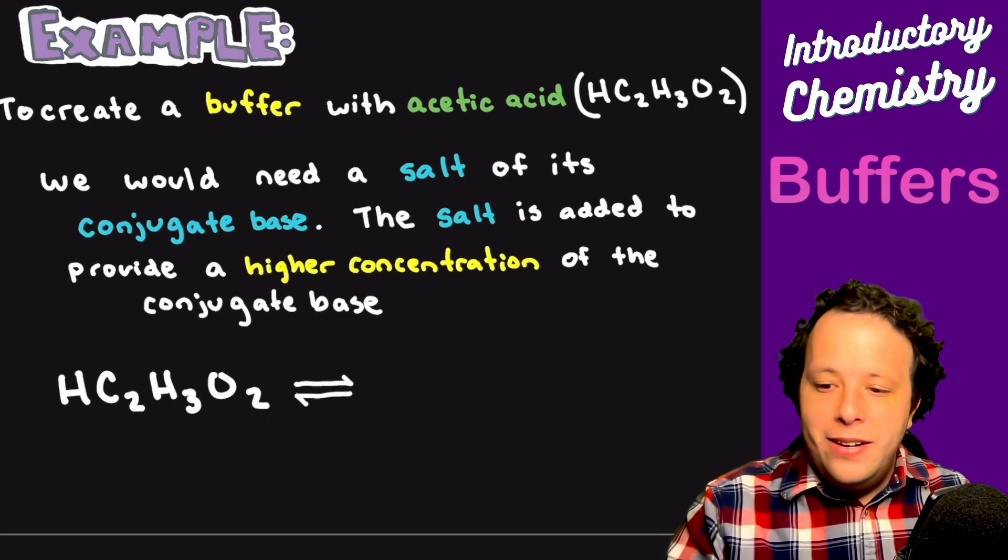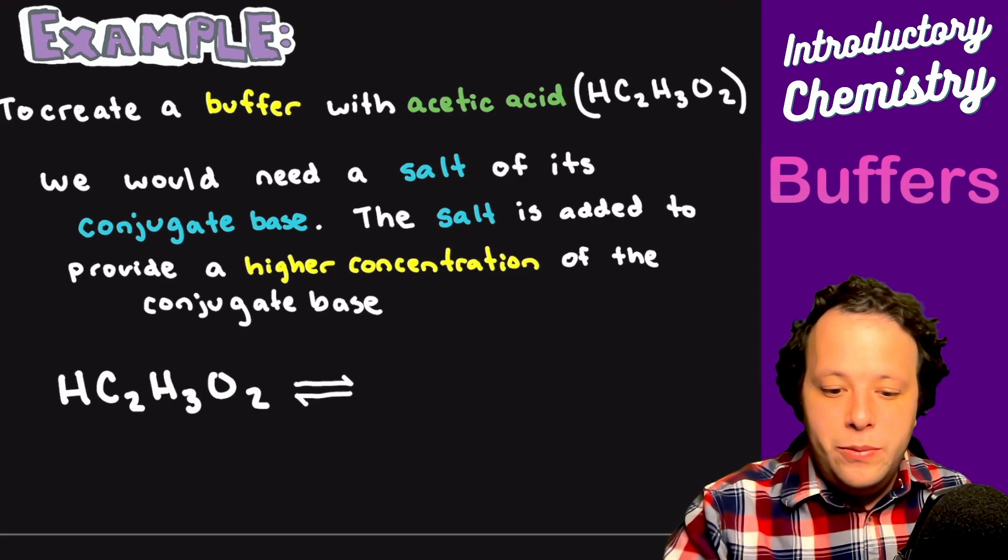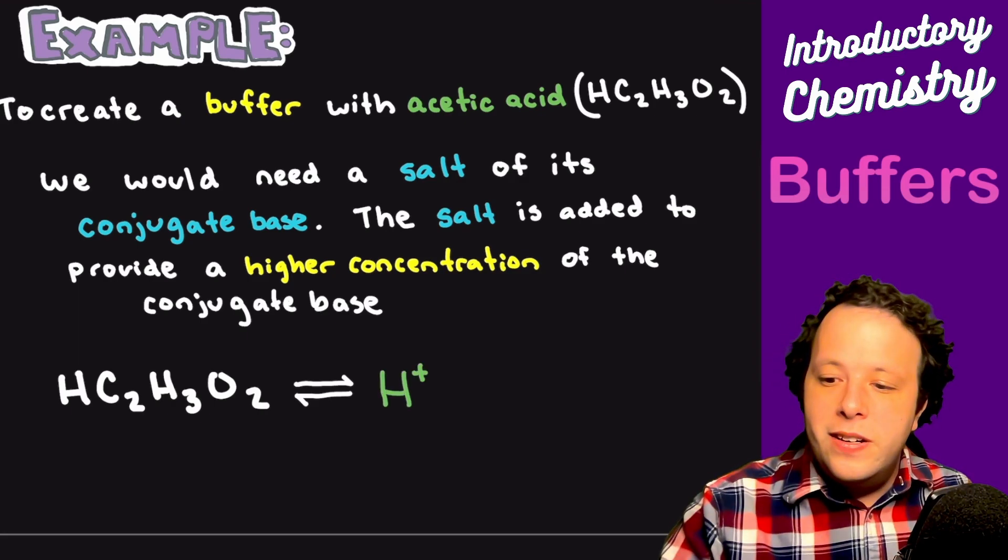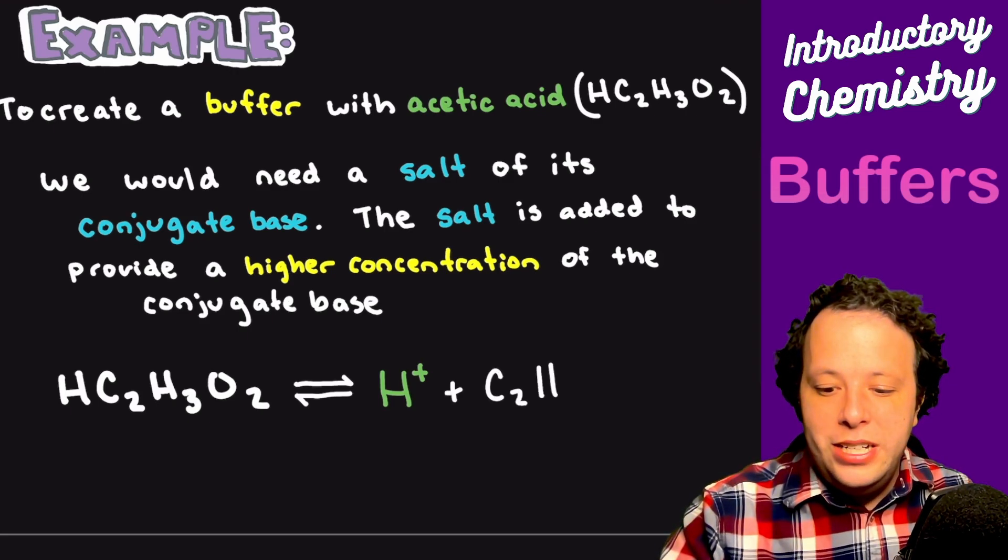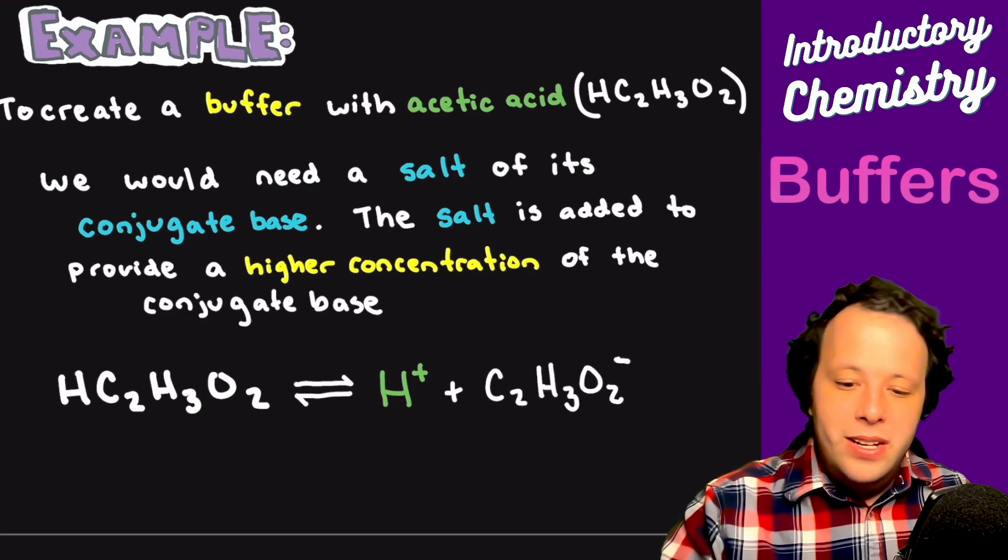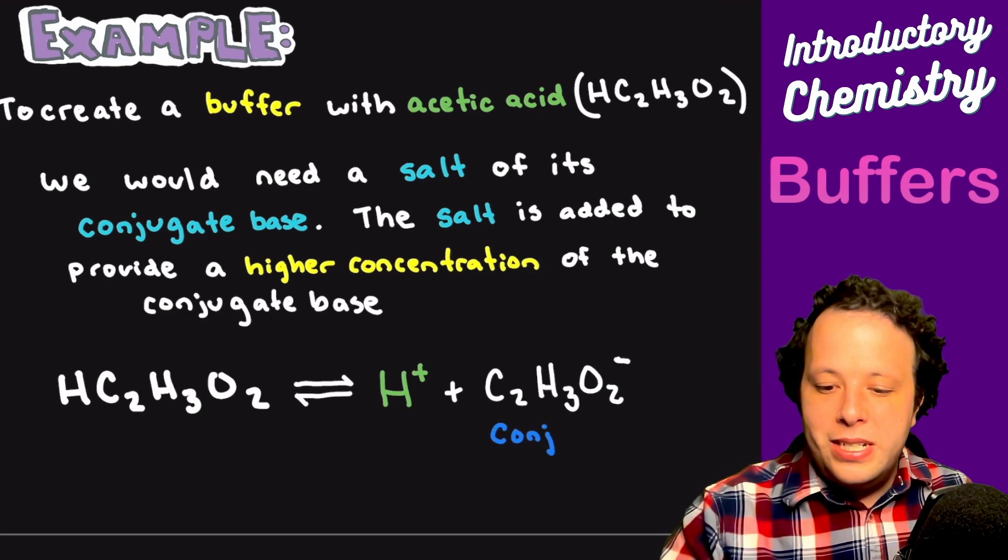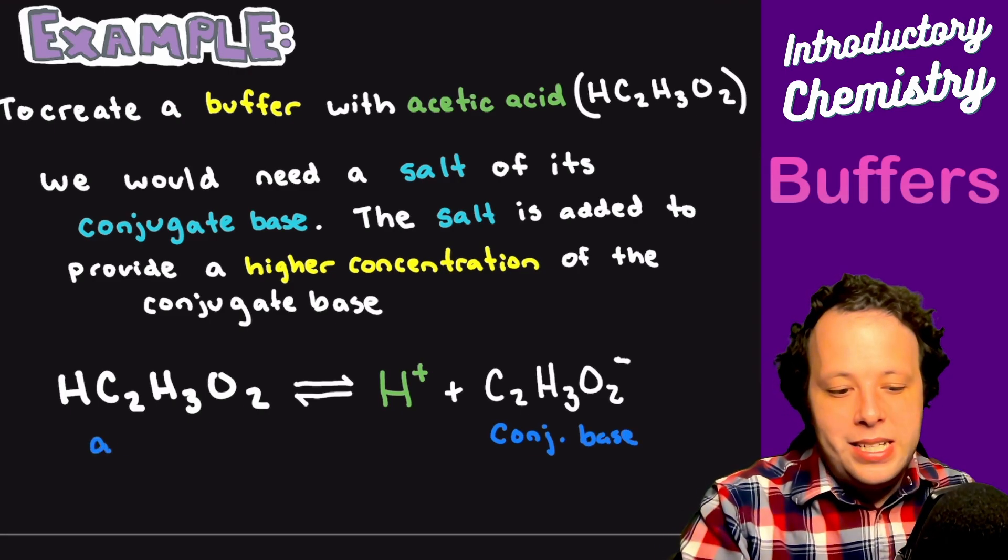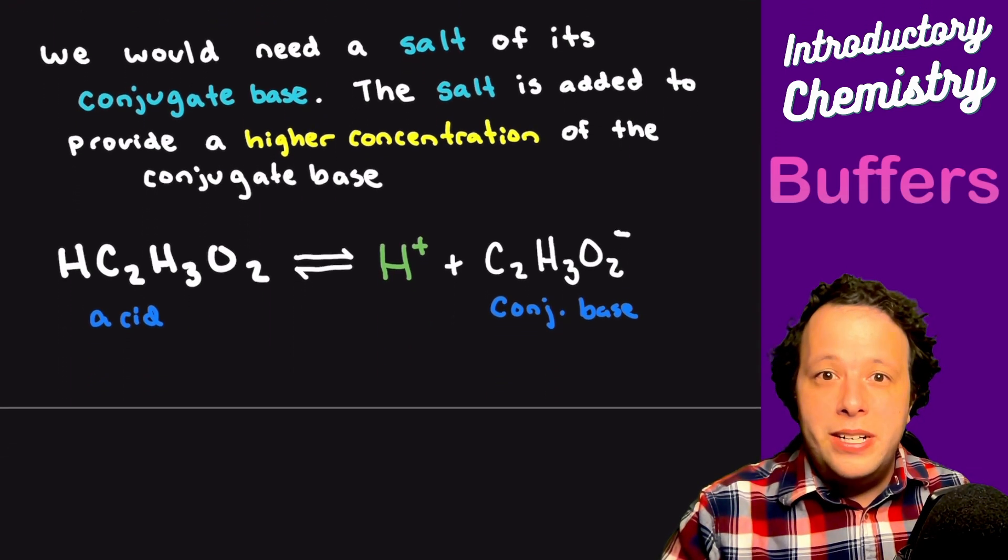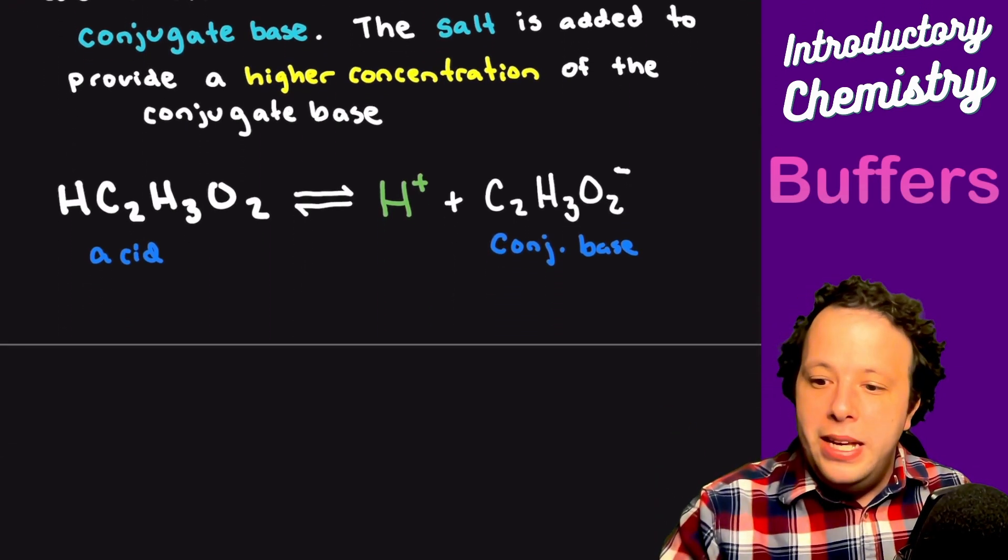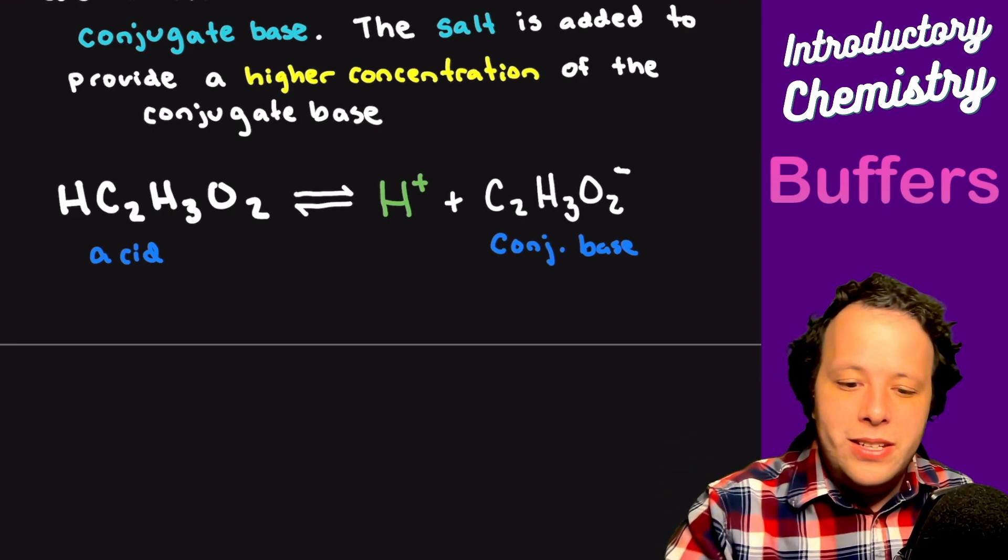If I have acetic acid and I lose a proton and dissociate in water, we're going to have C2H3O2- as its conjugate base. So if we have the conjugate base and the acid, what could I use as a salt for this? Well, some examples would be essentially any alkali metal bonded to that acetate ion, like sodium acetate.